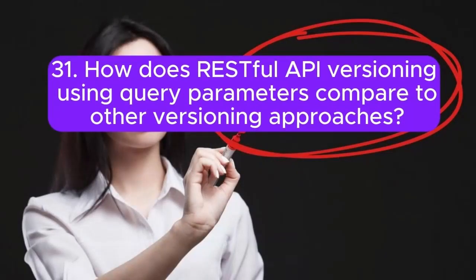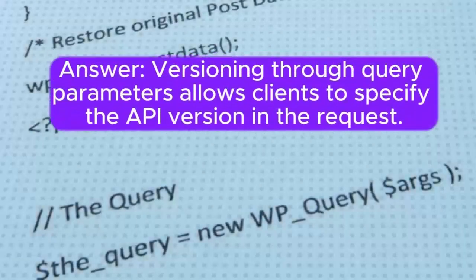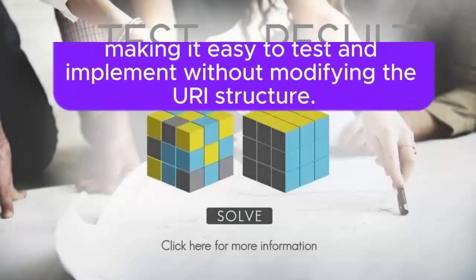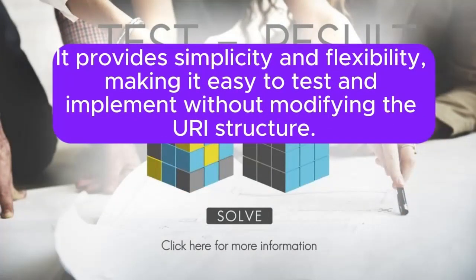Question 31: How does RESTful API versioning using query parameters compare to other versioning approaches? Versioning through query parameters allows clients to specify the API version in the request. It provides simplicity and flexibility, making it easy to test and implement without modifying the URI structure.